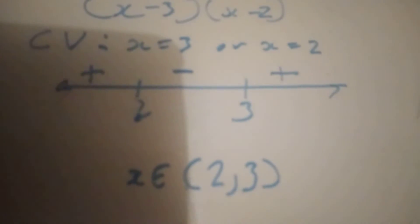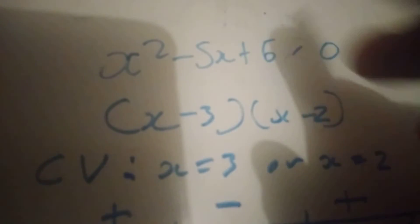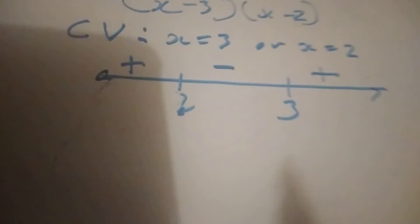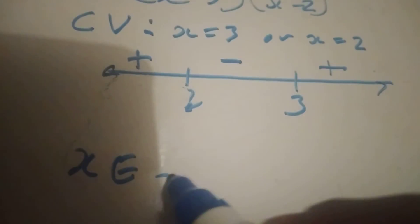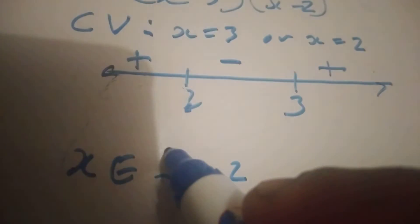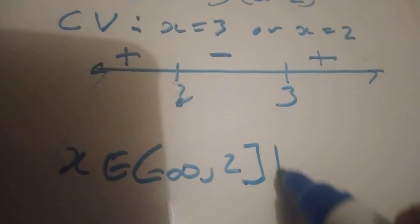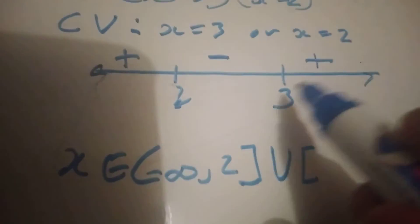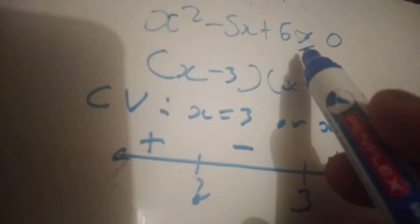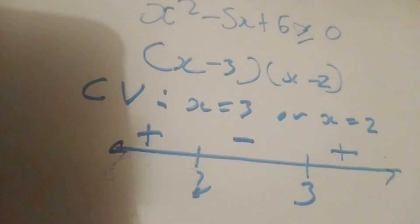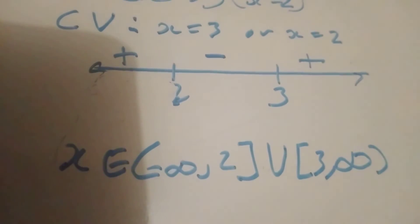The first example was greater than or equals to 0. Let me redo that: x is an element of the interval from negative infinity until 2 — infinity always gets a curve bracket, and since it was greater than or equals to, we put a square bracket at 2 — union — square bracket 3 to infinity. Wherever these critical values appear, put a square bracket if it is greater than or equals to, but a curve bracket if it's just greater than. Infinity, no matter what, always gets a curve bracket.